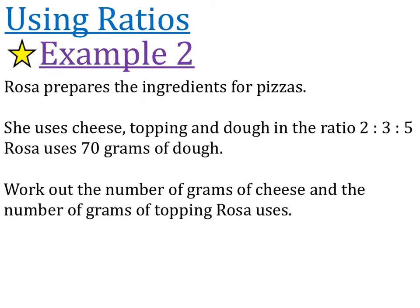So this next question is ever so slightly different, but it reads exactly the same. Rosa prepares the ingredients for some pizza. She uses cheese, toppings, and dough in the ratio 2 to 3 to 5. Rosa uses 70 grams of dough. Work out the number of grams of cheese and the number of grams of toppings that Rosa uses. So we need to choose the first 3 things, which are cheese, toppings, and dough. So let's write those letters out. Cheese, toppings, and dough in the ratio 2 to 3 to 5.